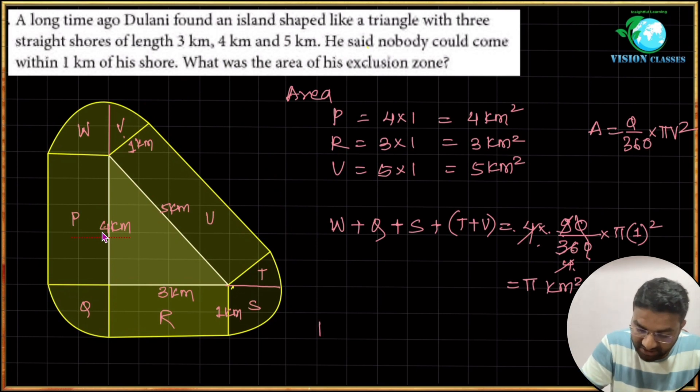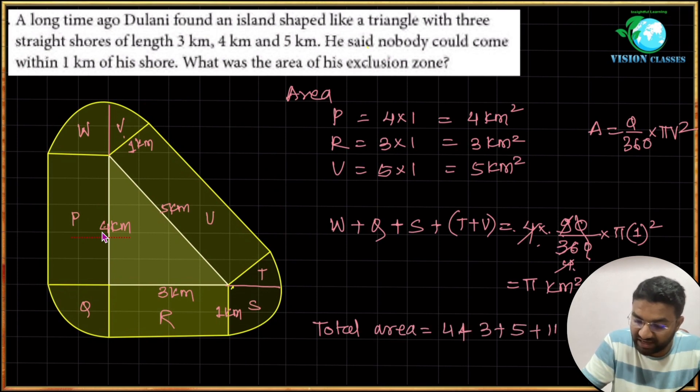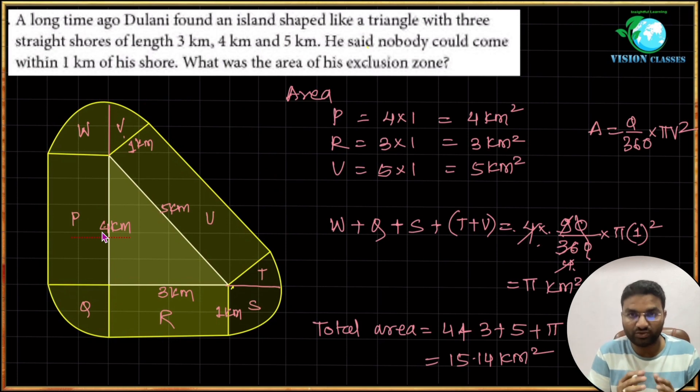Four quarters means even one circle we can take it straight away. So total area here will be: total area is equal to 4 plus 3 plus 5 plus π, and we will get straight away 15.14 square kilometers. This is the area that we will get.